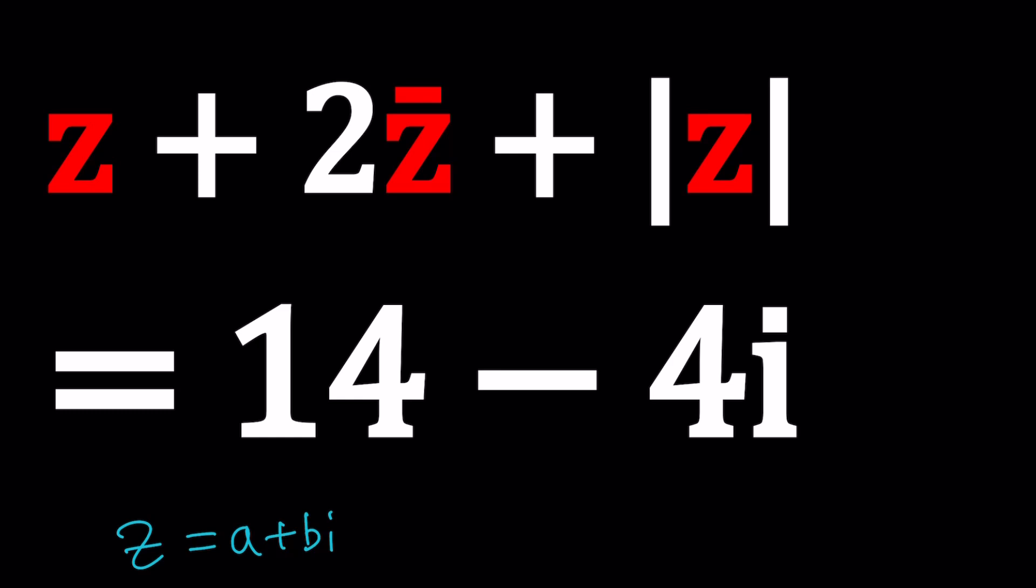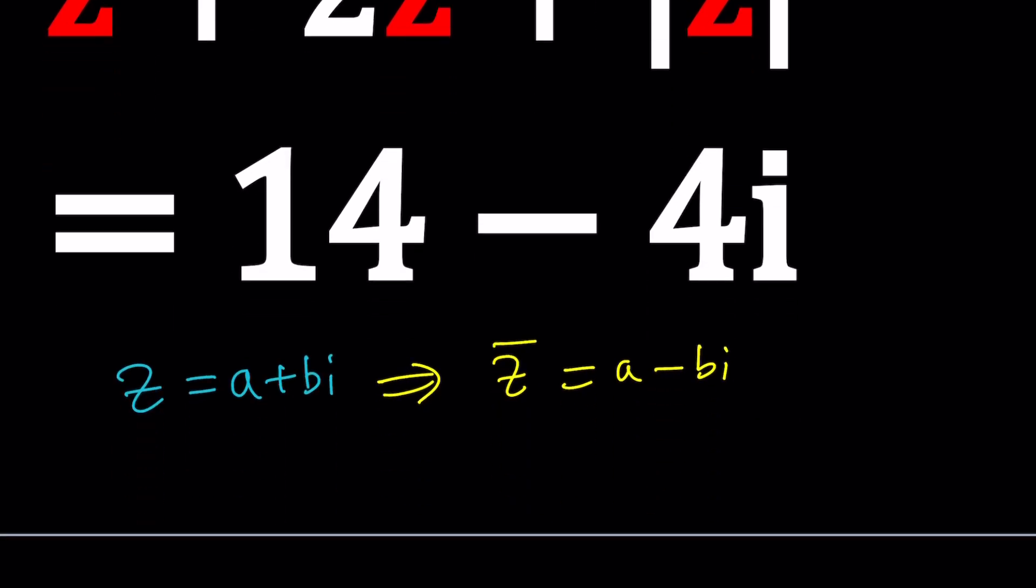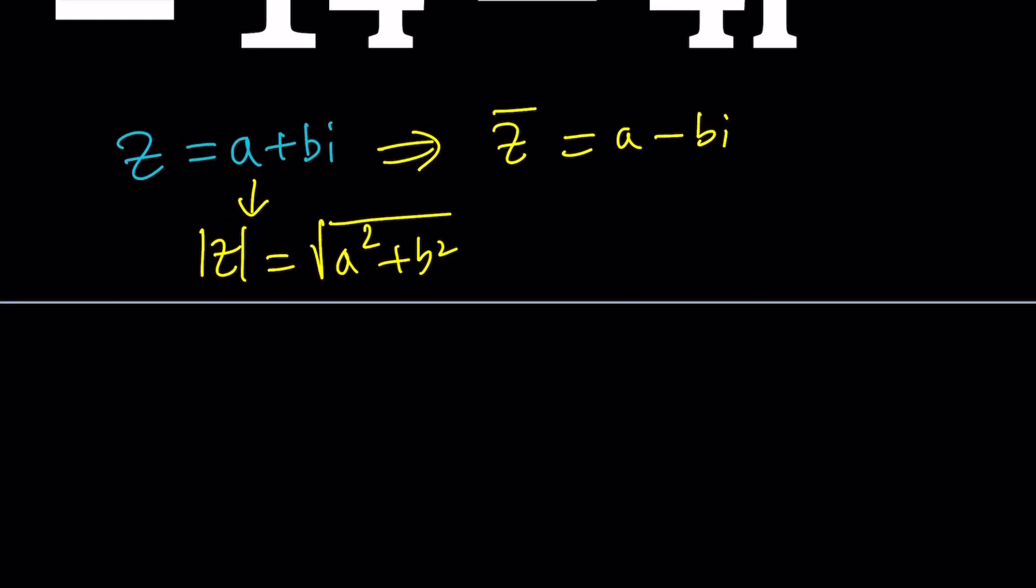So let's go ahead and plug it in. Replace Z with A plus B I. Of course, this implies that Z bar is A minus B I. That's the complex conjugate. If you're new to complex numbers or if you need a refresher, go ahead and check out my lecture videos and other videos as well, of course. The more, the merrier, right? So what is the absolute value of Z though? If Z is that, the absolute value of Z is just going to be the square root of A squared plus B squared, which is defined as the distance from zero, remember?